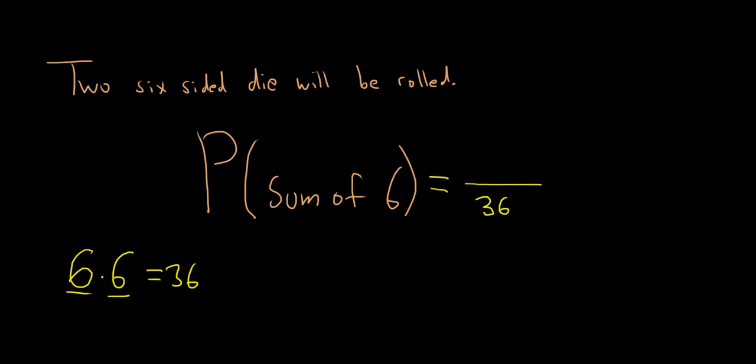Now we have to figure out how many ways can we get a sum of six. Let's think about that very carefully. So we can do one plus five or five plus one, right? That's one on the first die, five on the second, or five on the first die, one on the second. What else adds to six?